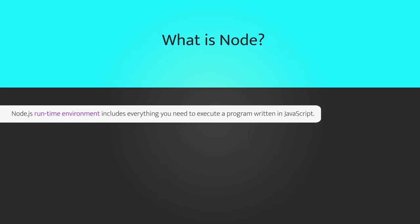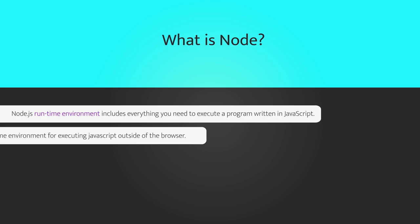The very first question that comes to mind is: what is Node.js? Node.js is a runtime environment that includes everything you need to execute a program written in JavaScript. To put it simply, Node.js is a runtime environment for executing JavaScript outside of the browser.